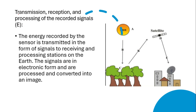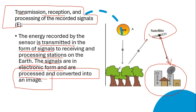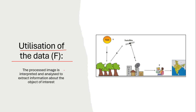Then there is transmission, reception, and processing of recorded signals. When this energy gets recorded in the satellite, it is transmitted in the form of signals to receiving and processing stations on earth. The satellite sends the recorded information to receiving stations, where those signals are in electronic form and are processed and converted into an image. The monitoring stations convert the electronic signal into an image. Then in the next step, utilization of data, this processed image is interpreted and analyzed to extract information about the object of interest, and can be used for multiple applications and analysis of earth's surface.